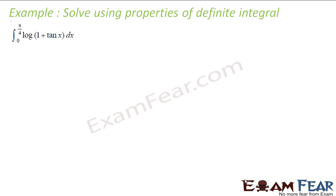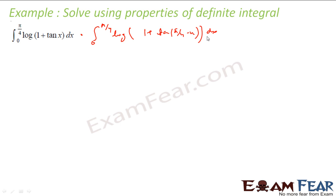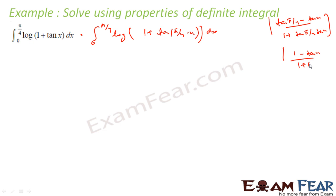This next example — let us try using properties. Let us make it f(π/4 - x) since we do not have any other option. So this becomes the integral from 0 to π/4 of log(1 + tan(π/4 - x)) dx. Now 1 + tan(π/4 - x) equals 1 + (1 - tan x)/(1 + tan x), since tan(π/4) = 1. So we get (1 + tan x)/(1 - tan x) — wait, simplifying: (1 + tan x + 1 - tan x)/(1 + tan x) = 2/(1 + tan x).